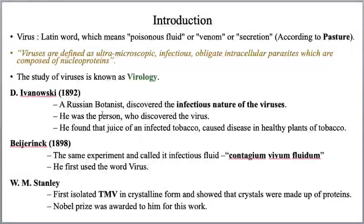When he sprayed this infected tobacco juice on a healthy tobacco plant, the healthy plant also suffered from the same disease. He then understood that this infected tobacco juice was causing disease to the healthy plant as well — meaning virus spreads disease from an infected plant to a healthy one. This is all the discovery of Ivanovsky.